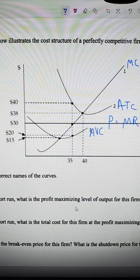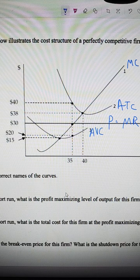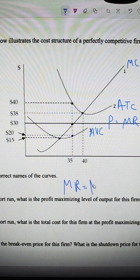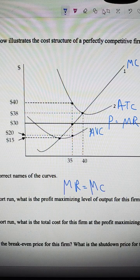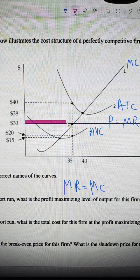The short run profit maximizing output is where MR equals MC. So we follow this out to here.